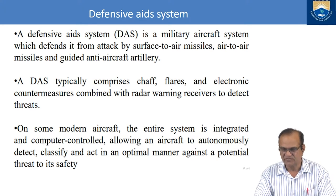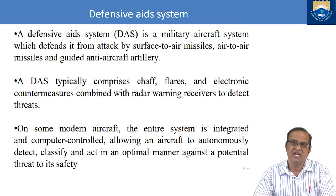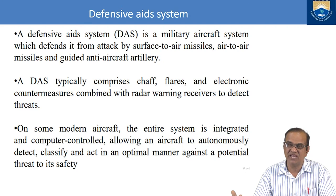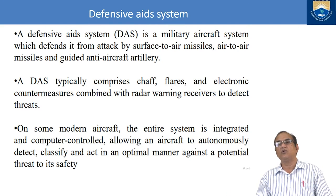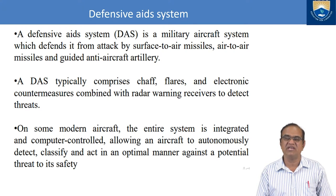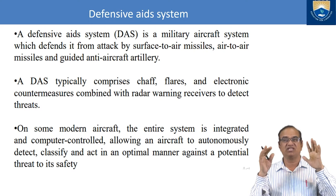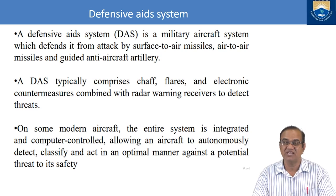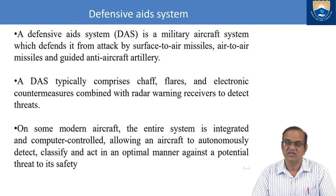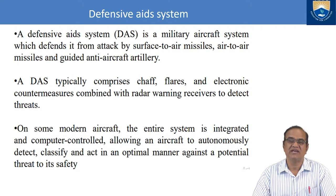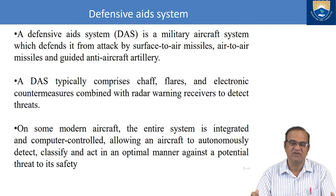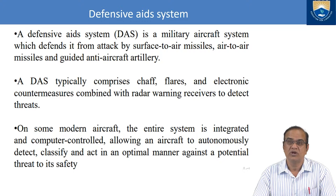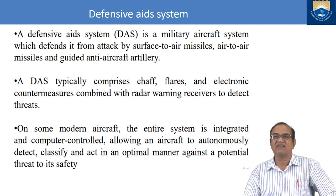The defensive aid system (DAS) is a military aircraft system which defends against attack by surface-to-air missiles, air-to-air missiles, and guided anti-aircraft artillery. When military aircraft are flying, they are always targets — enemy aircraft, missiles, or man-held missiles (as seen in the Ukraine conflict) can come and hit. Defensive aids help the aircraft escape from such threats.